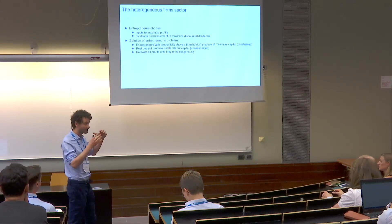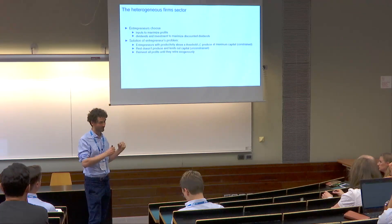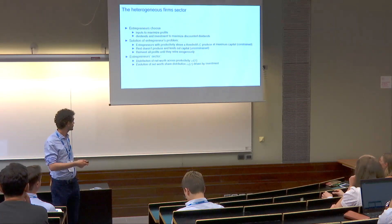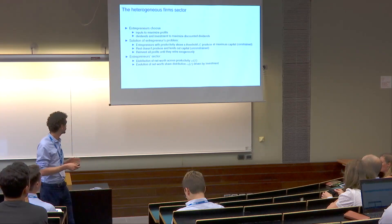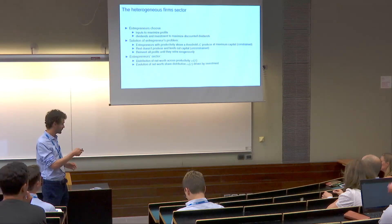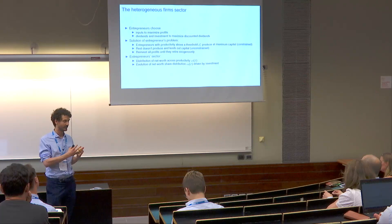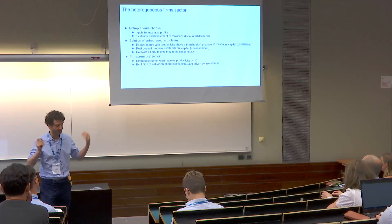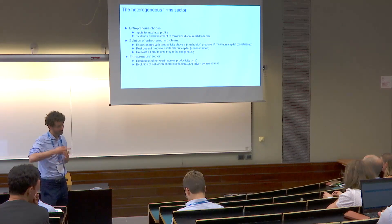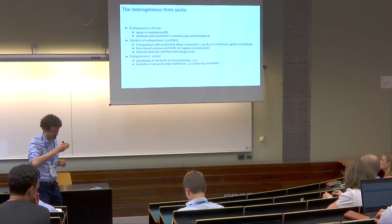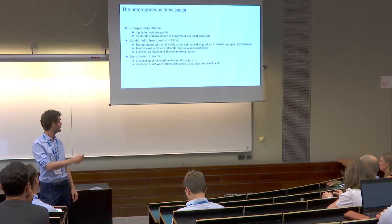Summarizing: entrepreneurs make profits and reinvest all of them. The more profits they make, the faster they save out of their constraint. Profits are key — the opportunity to make profits is key for these guys. Looking at the whole sector, we have a distribution of net worth across productivity levels — the object omega_t(z) — which tells us which fraction of total net worth is owned by firms with productivity level z. This object is time-varying and driven by the investment choices of firms, which in turn are driven by their profit opportunities.